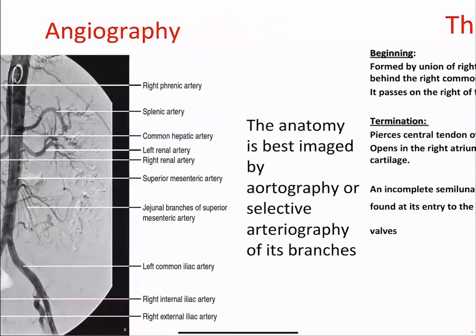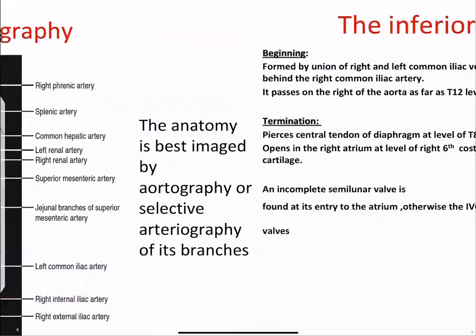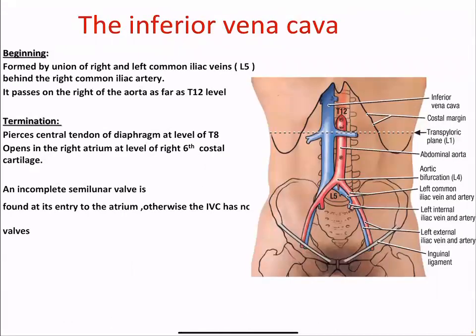Now we will talk about the inferior vena cava. The IVC begins by the union of the right and left common iliac veins at the level of L5, posterior to the right common iliac artery. It passes to the right of the aorta as far as the T12 level. It terminates by piercing the central tendon of the diaphragm at T8 and opens into the right atrium at the level of the right 6th costal cartilage. It is valveless except when it enters the right atrium, where there is an incomplete semilunar valve.